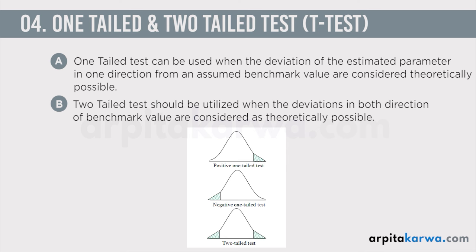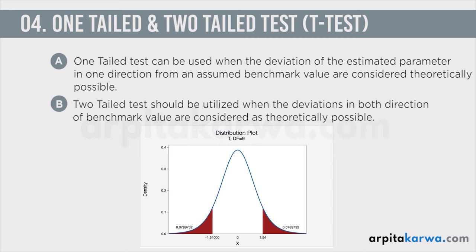Two-tail tests are also known as non-directional hypothesis tests, and this is a standard test of significance to determine if there is a relationship between variables in either direction. This is known as one-tailed and two-tailed test. In this lecture we looked at hypothesis testing, the two types of tests namely parametric and non-parametric, and we also looked at two major tests: P-test and T-test. That's it for this video lecture — we'll meet soon in the next video. Happy learning, keep loving literature, and stay tuned to arpitakarwa.com.